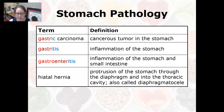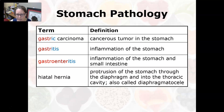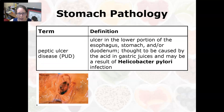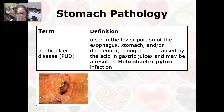Now into the stomach pathologies. Gastric carcinoma is a cancerous tumor in the stomach. Gastritis is inflammation of the stomach. Gastroenteritis is inflammation of the stomach and small intestine. A hiatal hernia is a protrusion of the stomach through the diaphragm and into the thoracic cavity, also called a diaphragmatic hernia. A peptic ulcer — peptic ulcer disease or PUD — is an ulcer in the lower portion of the esophagus, the stomach, or the duodenum. It is thought to be caused by acid and gastric juices, but it actually results from Helicobacter pylori infection, a bacteria that can withstand the acidity of the stomach and burrow through the mucus lining, causing an ulcer and pain.